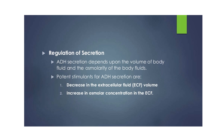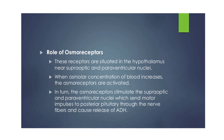ADH secretion depends on the volume and osmolarity of body fluids. The potent stimulants for ADH secretion are decreased extracellular fluid volume and increased osmolar concentration in the ECF. Osmoreceptors are situated in the hypothalamus near the supraoptic and paraventricular nuclei. When osmolar concentration of blood increases, these osmoreceptors are activated and stimulate the supraoptic and paraventricular nuclei, which send signals through nerve fibers to the posterior pituitary, causing release of ADH.